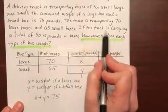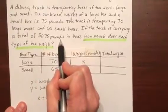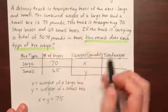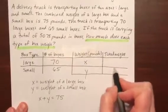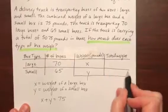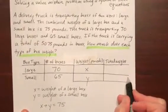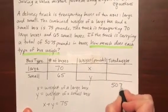And then it says if the truck is carrying a total of 5,075 pounds in boxes. So we've got total weight. So first we need the total weight of large boxes and the total weight of small boxes. And then we'll have the total weight of both down here is 5,075.